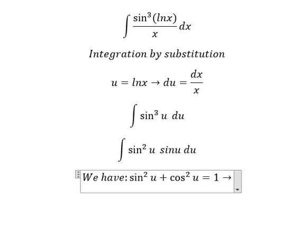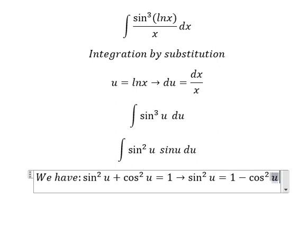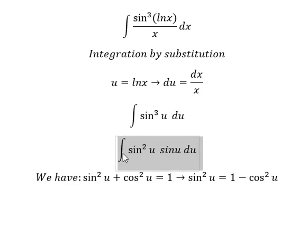Next we have sin²u plus cos²u equals to 1, so we have cos²u we put on the right and we change sin²u into 1 minus cos²u.